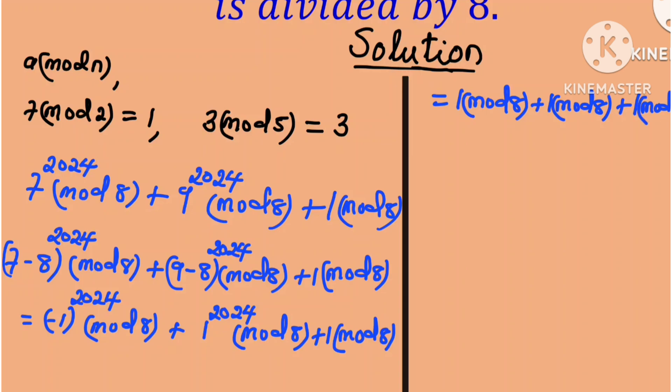And 1 mod 8 is the remainder obtained when 1 is divided by 8. So we know 1 divided by 8 is 0 remainder 1. So this is equal to 1 plus 1 plus 1. And so the remainder is 3.